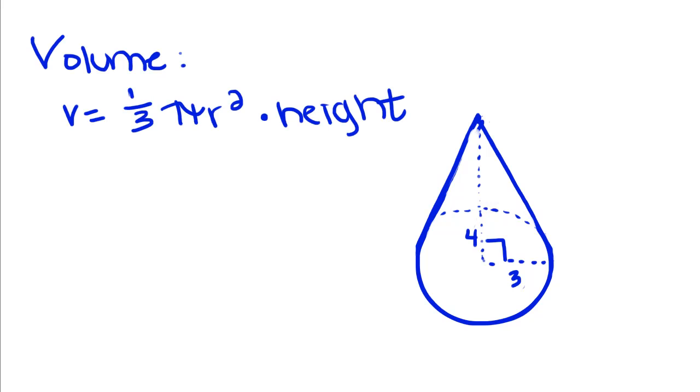So the volume of a right circular cone is equal to one-third pi r squared times height. Now remember, when we talk about the height, we're talking about this height that is drawn in perpendicular to the base.